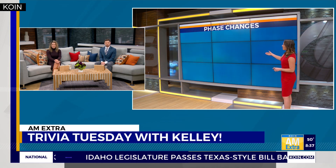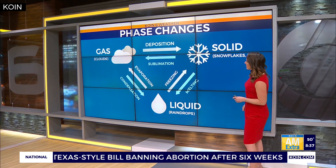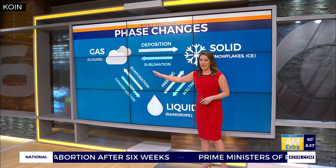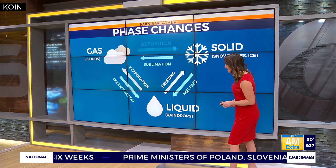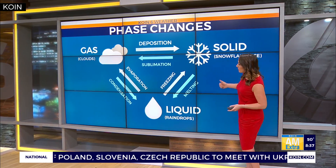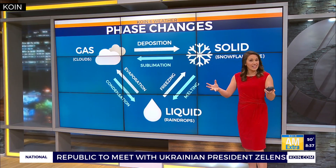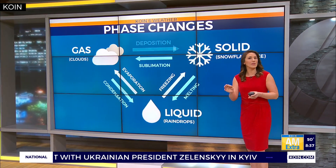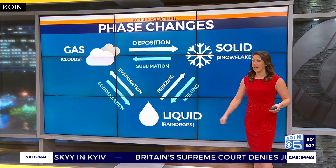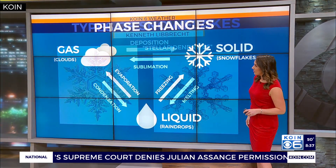You can see here some of the phase changes. Deposition is gas to a solid; sublimation again is solid to a gas. Then you've got evaporation when a liquid evaporates into water vapor — that's how you form clouds. Condensation is when that gas condenses on maybe a speck of dirt and then it turns to a liquid and falls as rain. So these are all of our phases here that we use all the time.